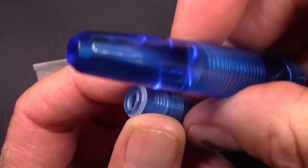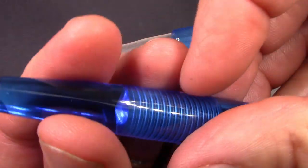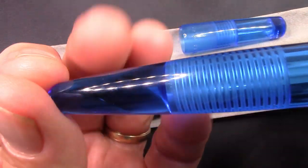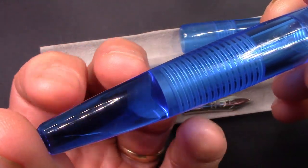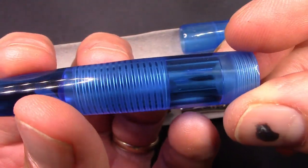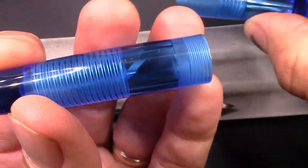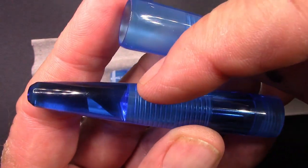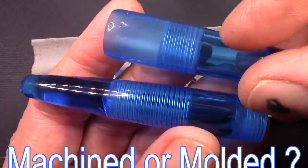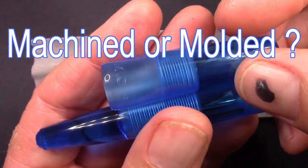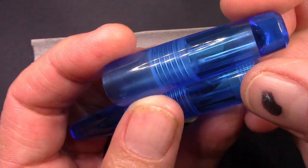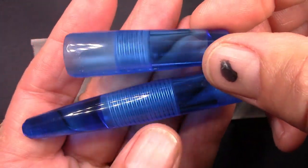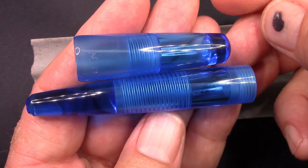So this acrylic is nicely done. I like the blue. I like the way it kind of bends the light around. Those grooves machined into the barrel, to me, match up to the grooves machined into the cap where the bottom of the section screws into. I like the design from that perspective.